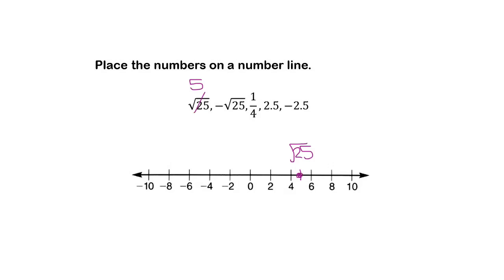Next we have negative square root of 25. The negative is outside, so I would simplify the square root of 25 first to 5, and then bring the negative sign over. So that would be negative 5, which would be right here.